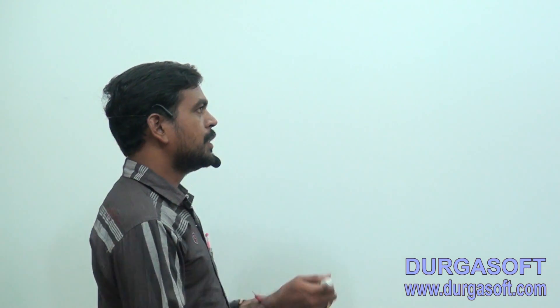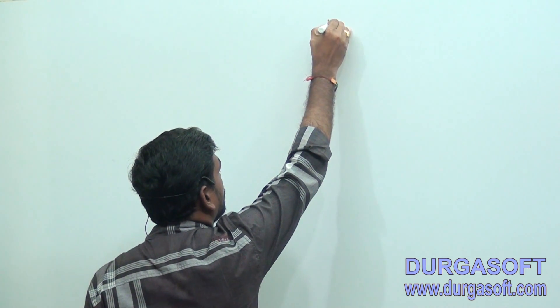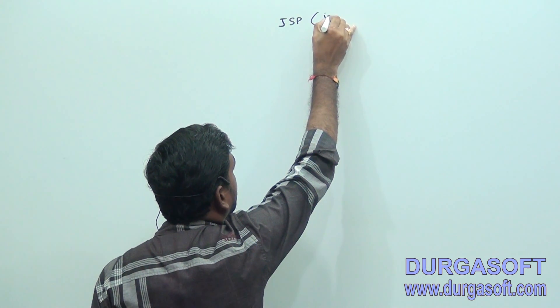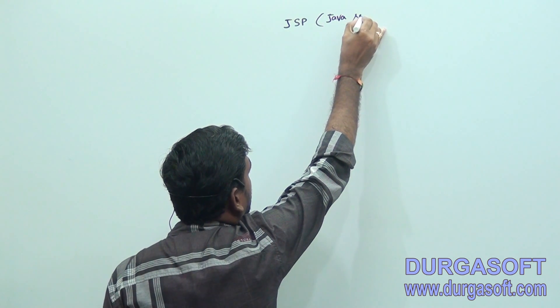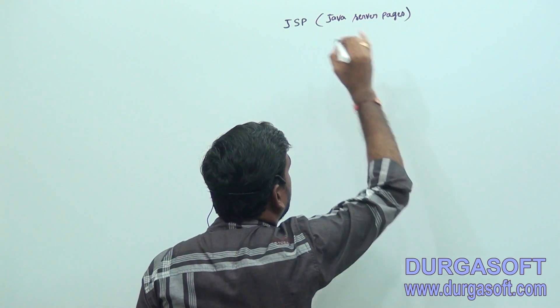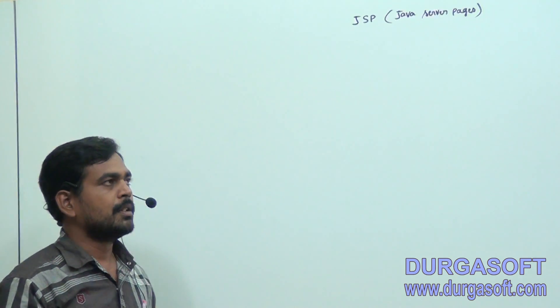Let us start with the session on JSP - Java Server Pages. This is given by the Sun Microsystem and is the most important technology in real time. For presentation purposes, industry people use JSP technology. By using JSP technology, we can develop dynamic web pages.